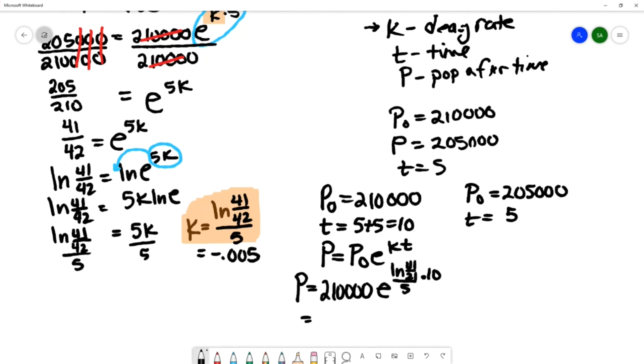When I type this into my calculator, I like to write the time in the front because I don't have to use as many parentheses that way. So I would write e^(10 × ln(41/42)).